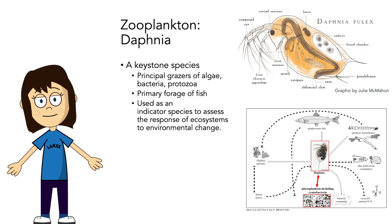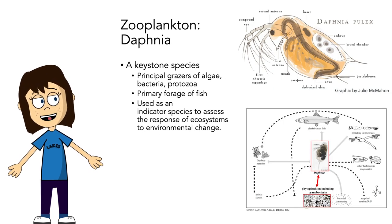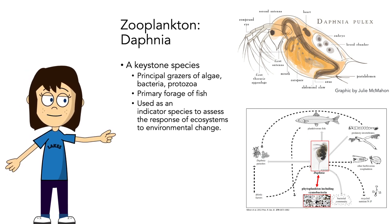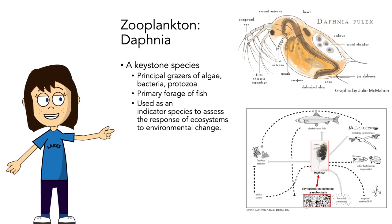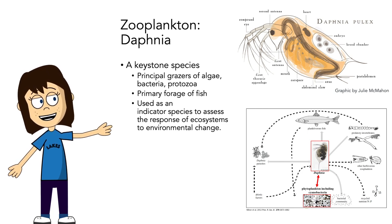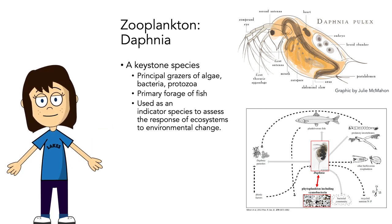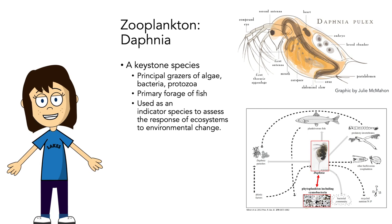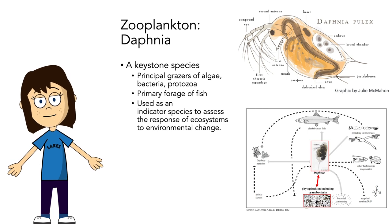One really popular genus in freshwater ecology is the zooplankton Daphnia. There are different species and subspecies of Daphnia, and they are often considered a keystone species in lakes. They're a principal grazer of algae, bacteria, and protozoa; a primary forage species for fish; and often used as an indicator to assess the response of ecosystems to environmental change.